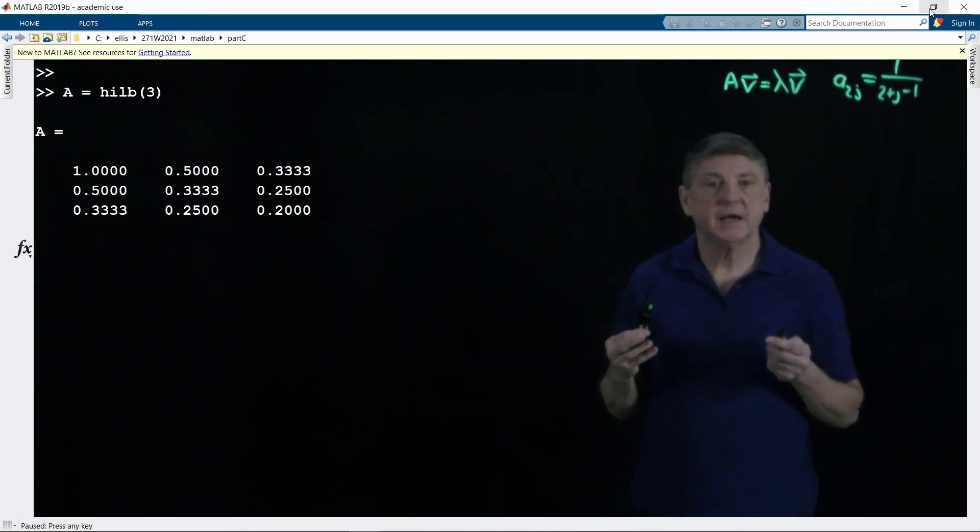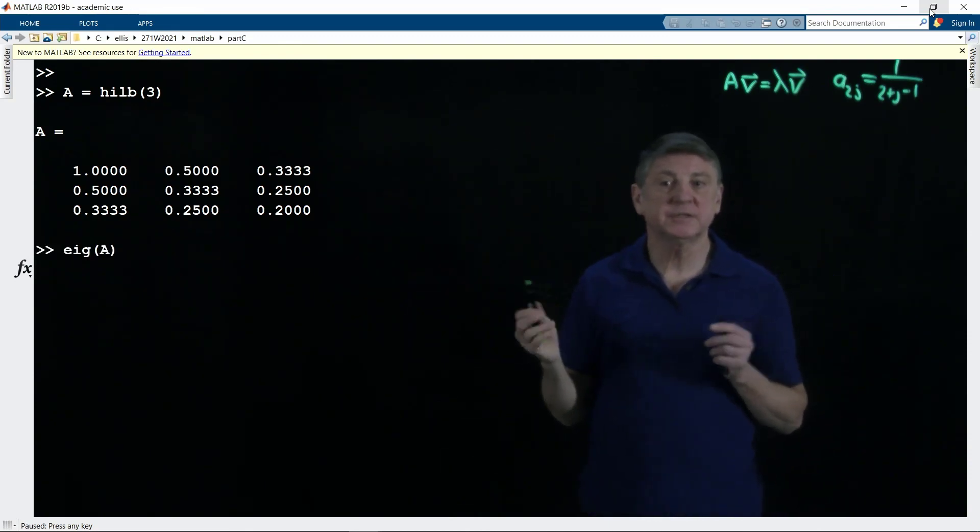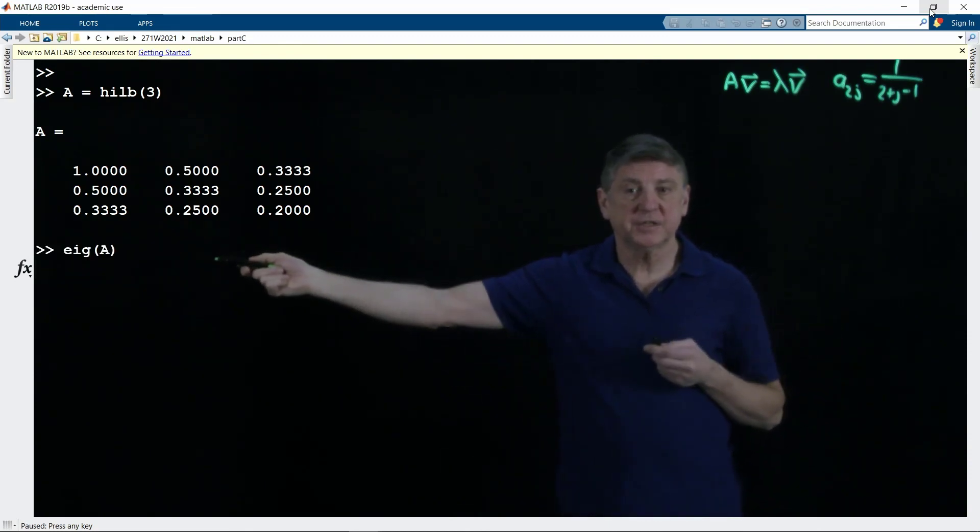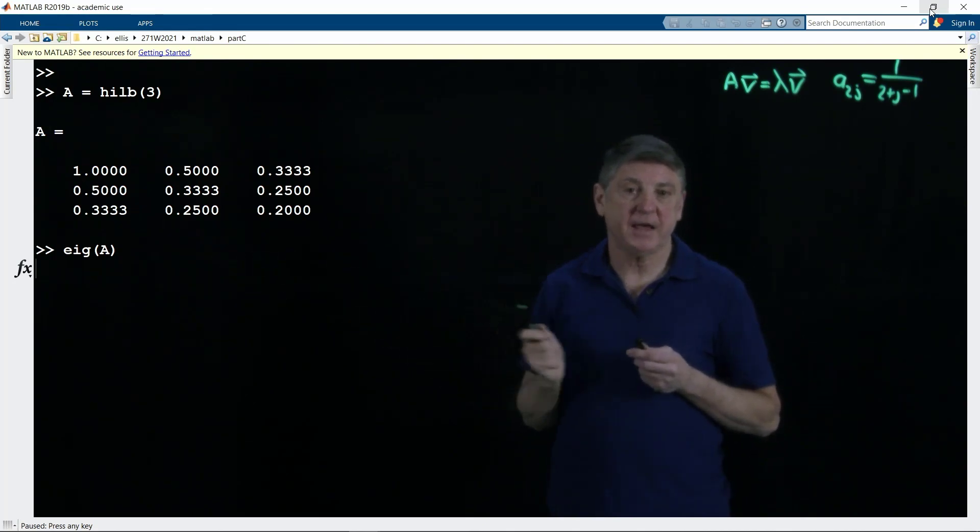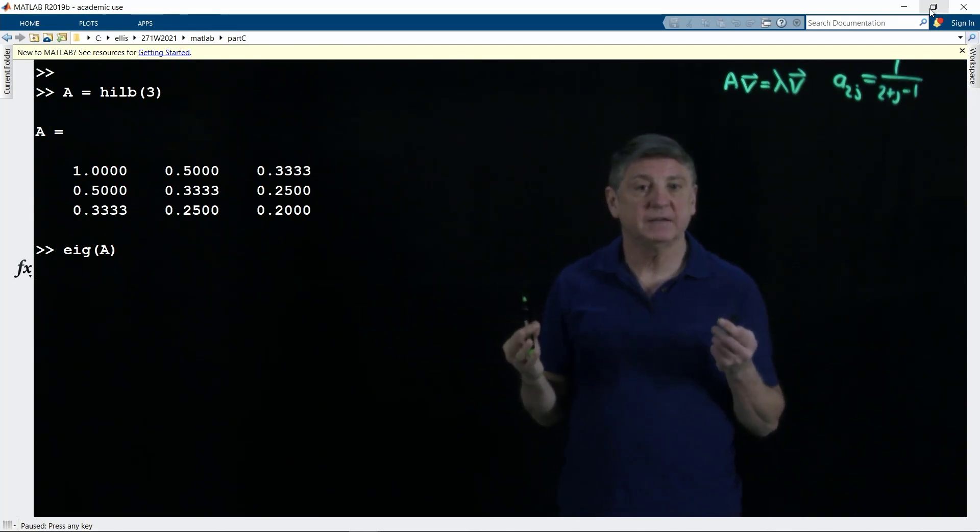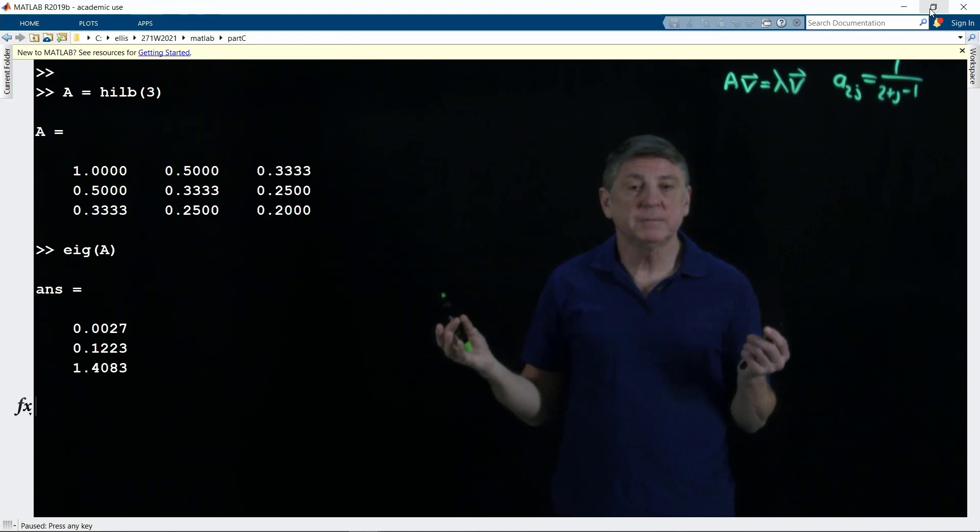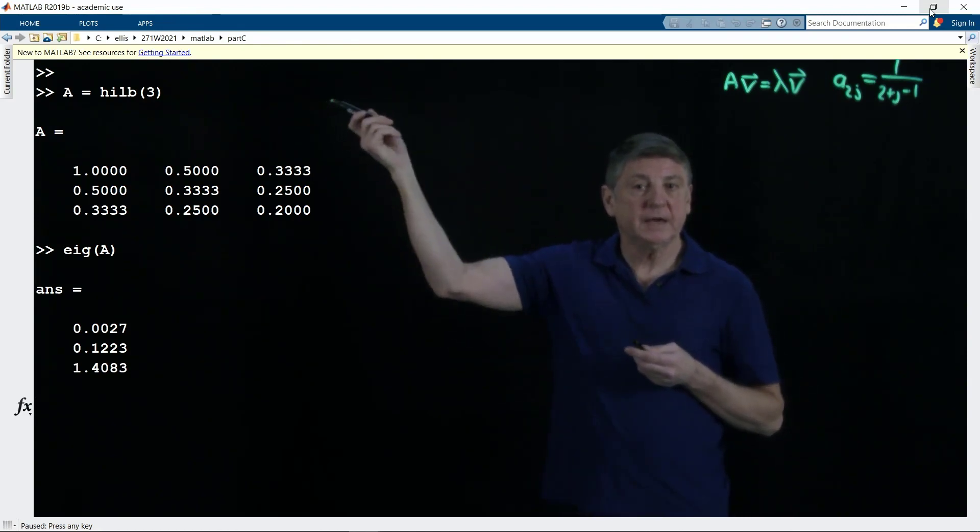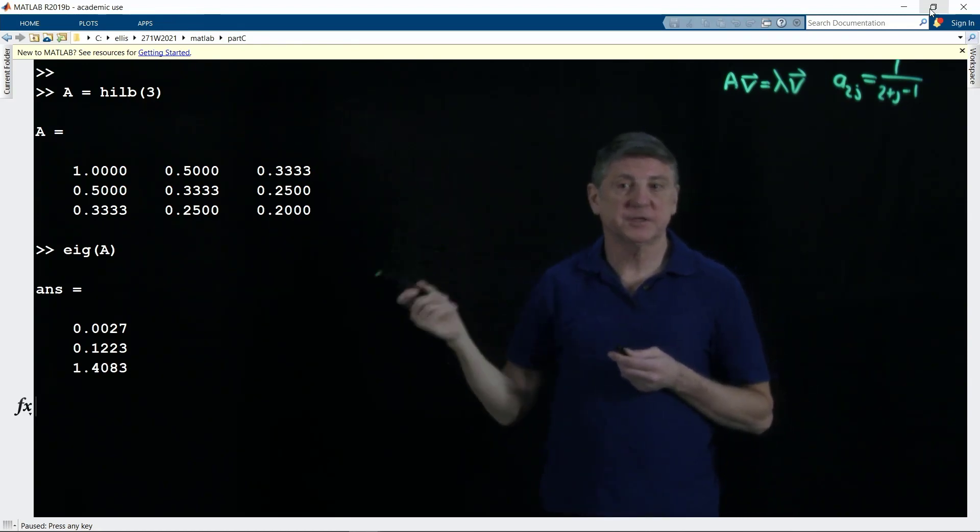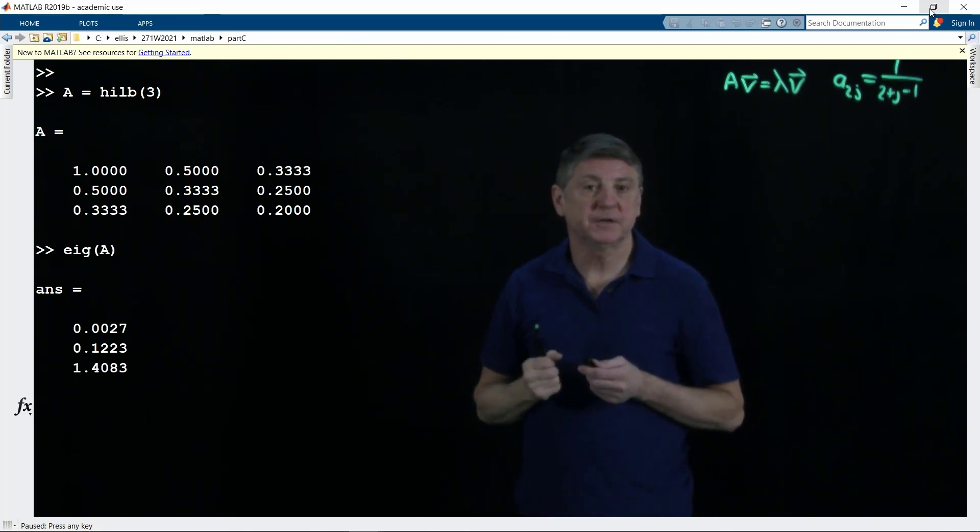And then in MATLAB, we can use a single statement, just EIG of A, and that will compute the eigenvalues. And so, using MATLAB, we're able to quickly create a matrix from a built-in function, and then we can use another built-in function to find the eigenvalues of that matrix.